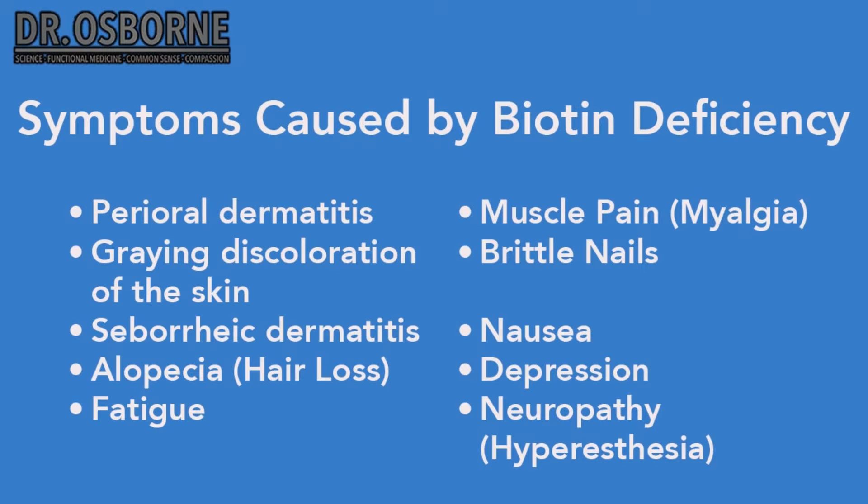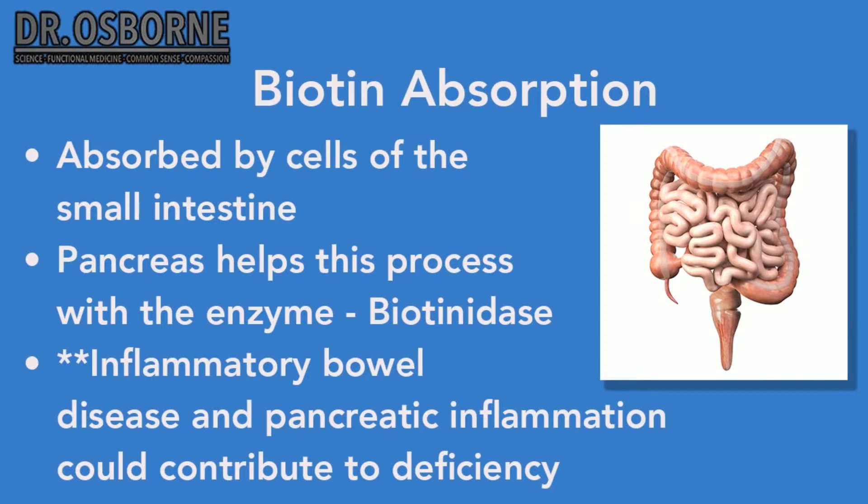If we understand how biotin is absorbed, then we can understand better whether you're at risk for developing a deficiency. First and foremost, you need stomach acid to absorb biotin. So let's think about all the ways that stomach acid can be disrupted and add those to the list of who's at risk.